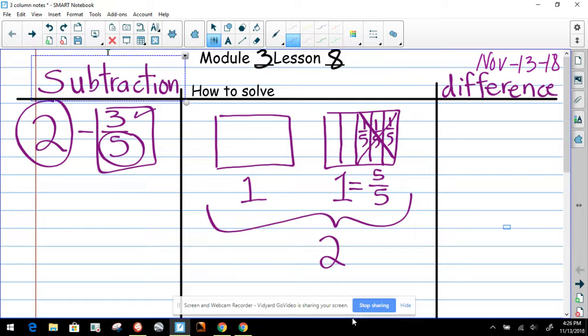Now we can cross those out because we subtracted them. So now after we have subtracted that, we have our answer. So we know that 2 minus 3/5, we have a remainder.